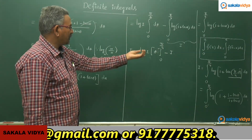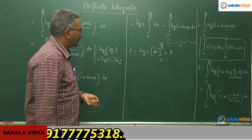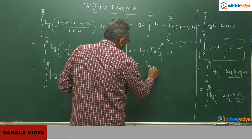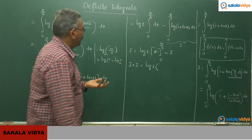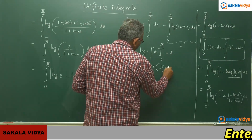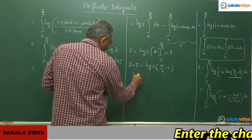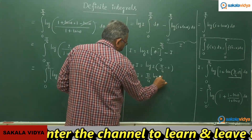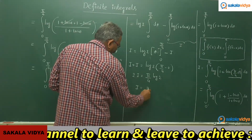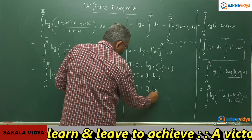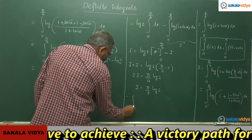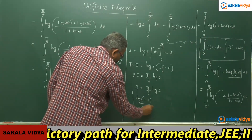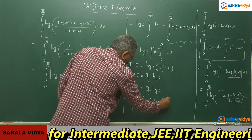Transposing the minus I to the left-hand side, we get I + I = 2I = log 2 times [θ] from 0 to π/4. Applying the limits, the upper limit π/4 minus the lower limit 0 gives π/4. So 2I = (π/4) log 2, and therefore I = (π/8) log 2. The integral 0 to 1 of log(1 + x)/(1 + x²) dx equals π/8 · log 2.